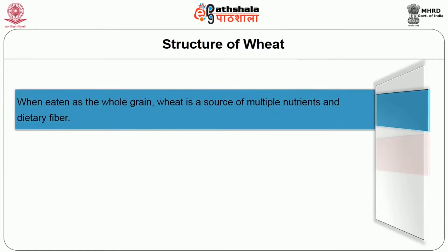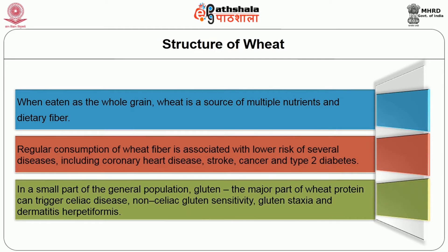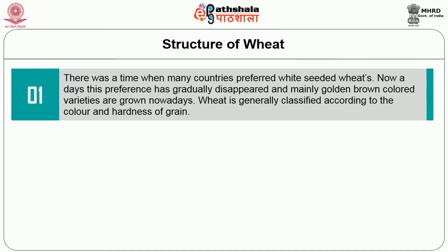When eaten as the whole grain, wheat is a source of multiple nutrients and dietary fiber. Regular consumption of wheat fiber is associated with lower risk of several diseases including chronic heart disease, stroke, cancer and type 2 diabetes. In a small part of the general population, gluten, the major component of wheat protein, can trigger celiac disease, non-celiac gluten sensitivity, gluten ataxia and dermatitis herpetiformis.